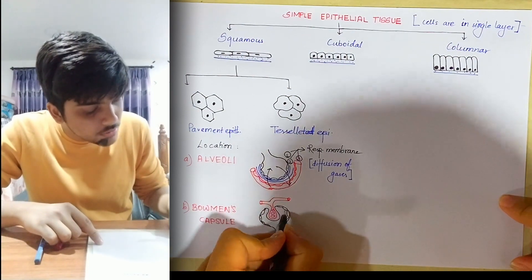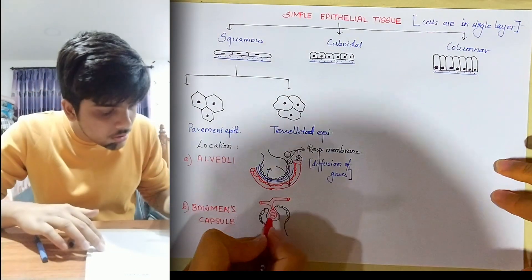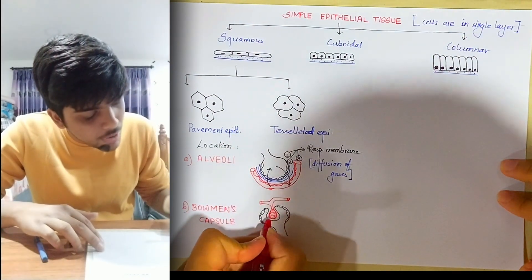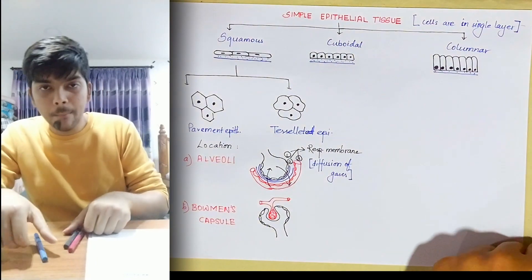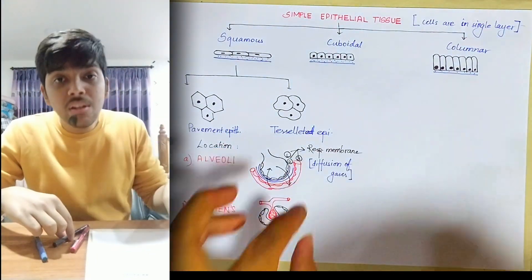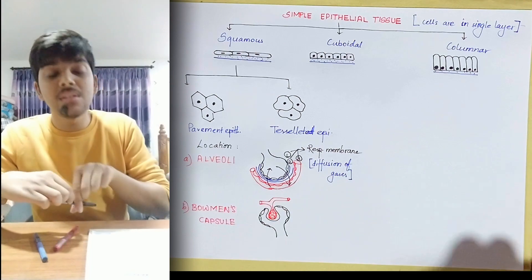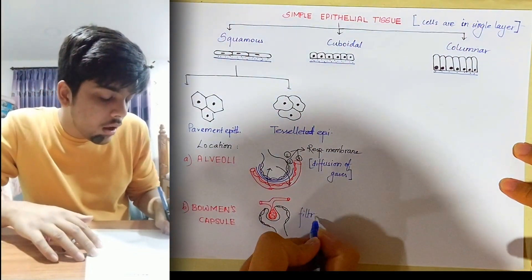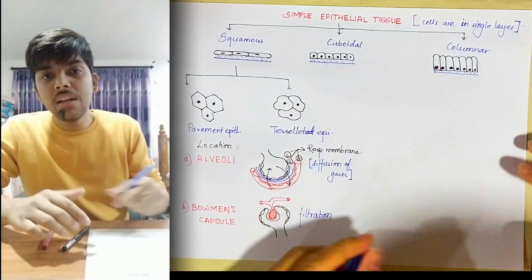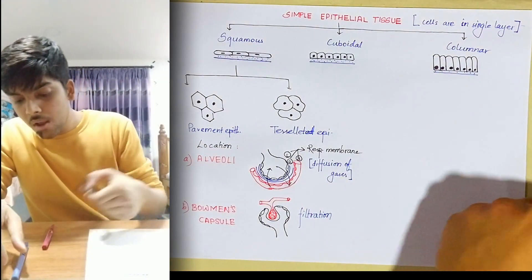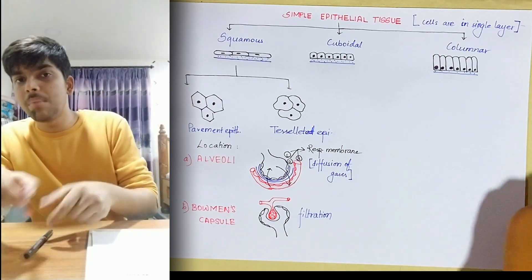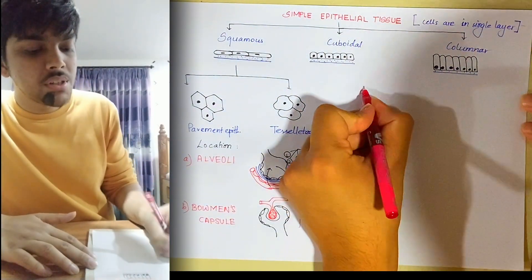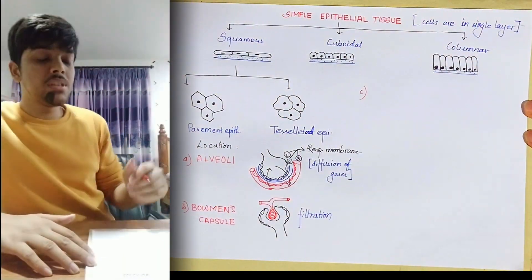Not only that — the capillary, which is the glomerulus, is also lined by simple squamous epithelium. This is where filtration during urine formation takes place. In a day, around 180 liters of fluid gets filtered but only about one liter of urine gets expelled from our body. So that's B.